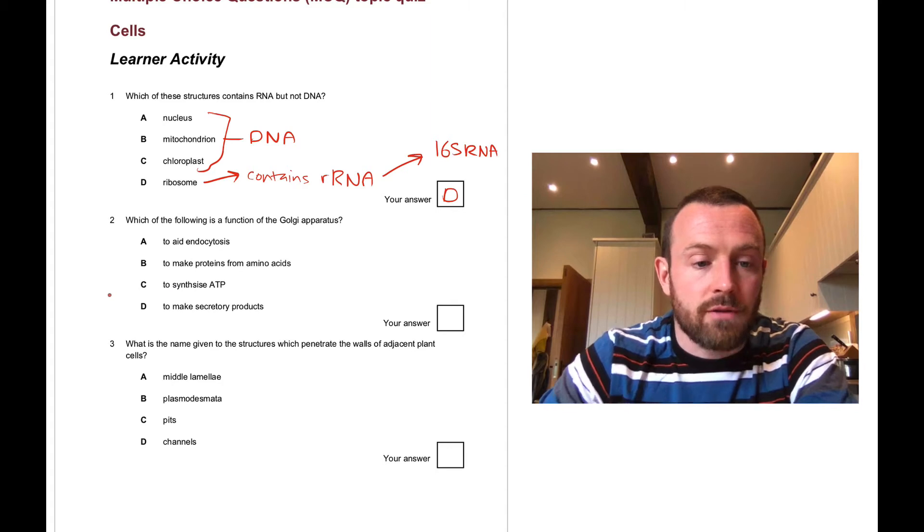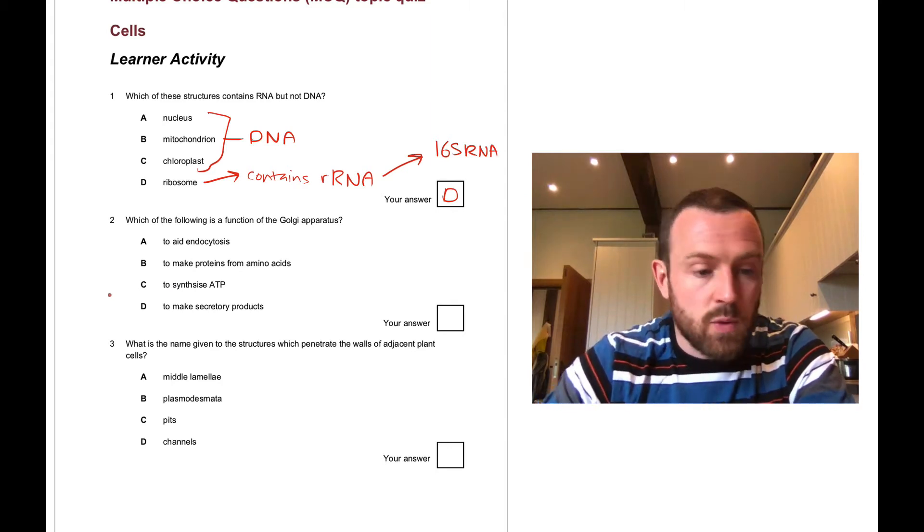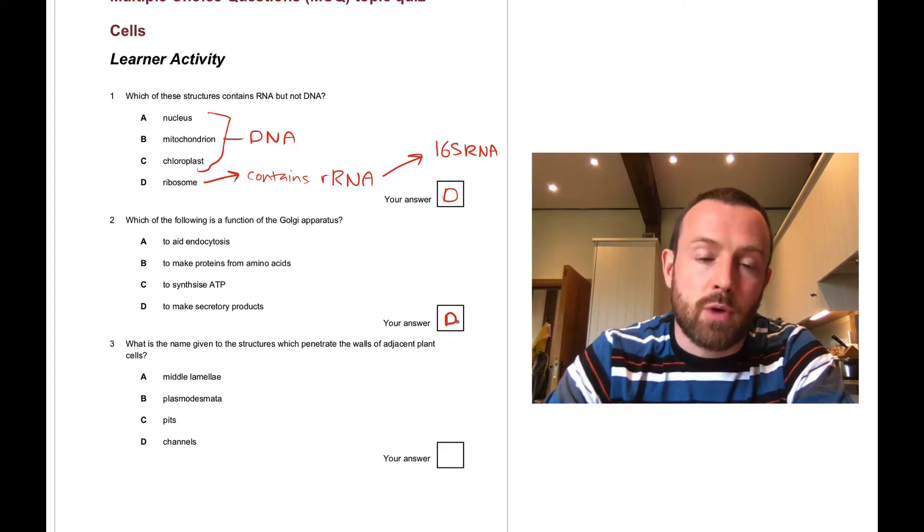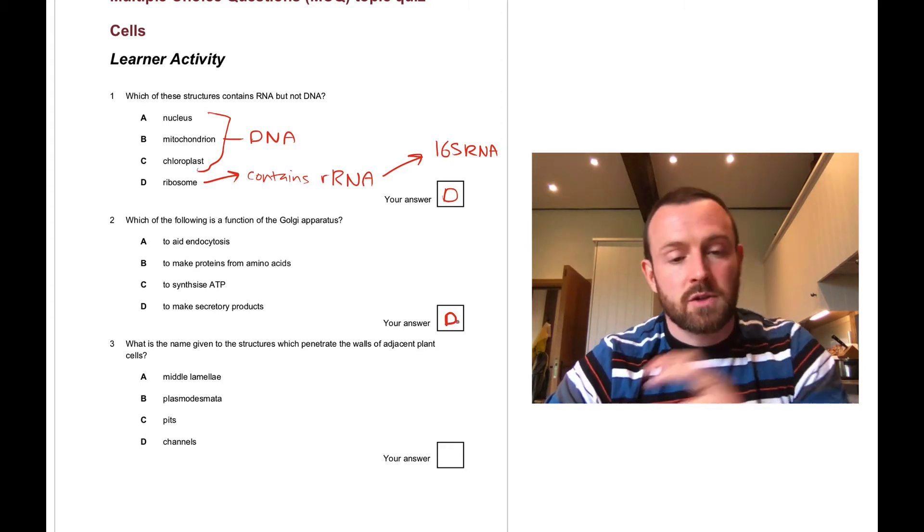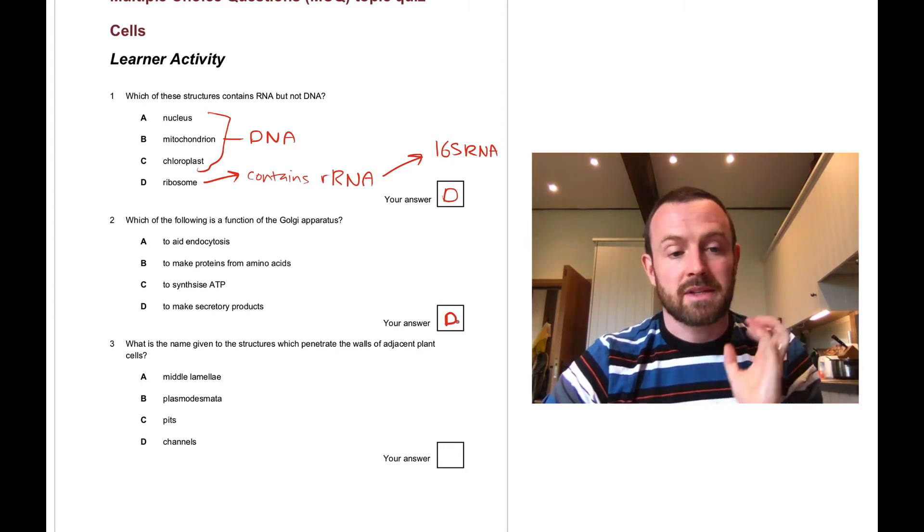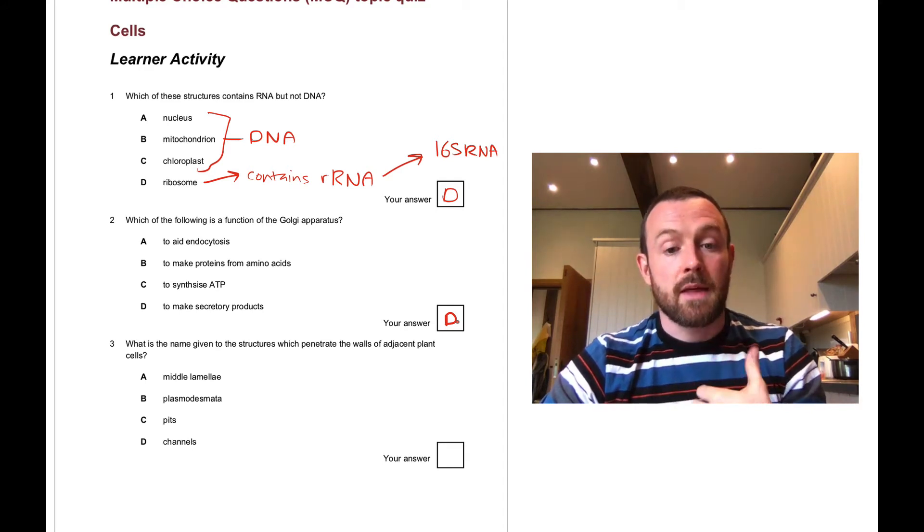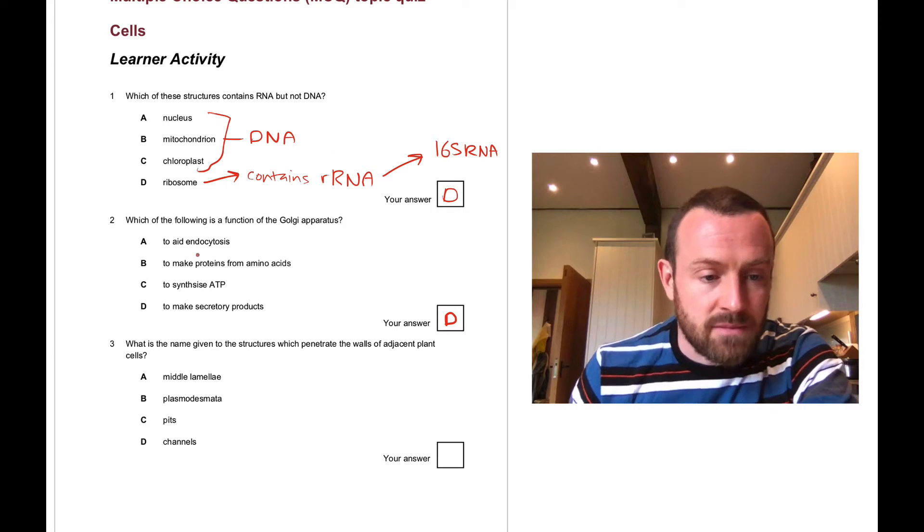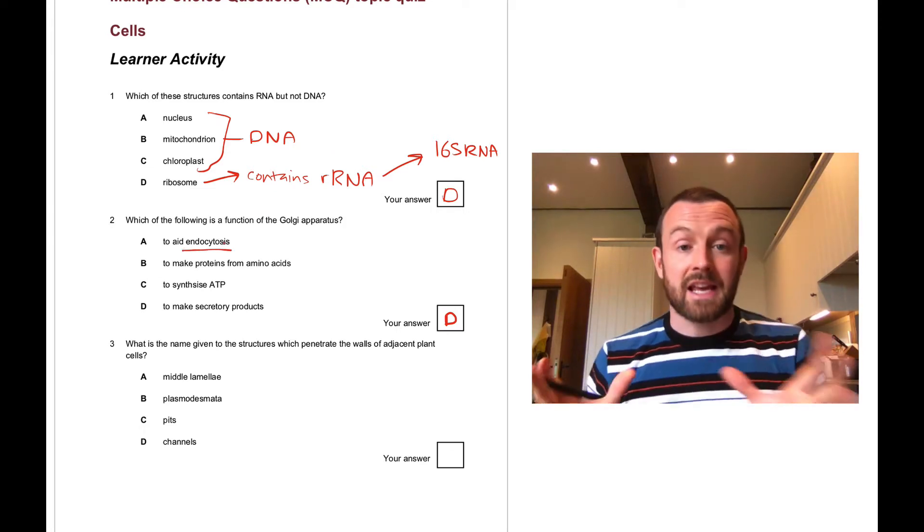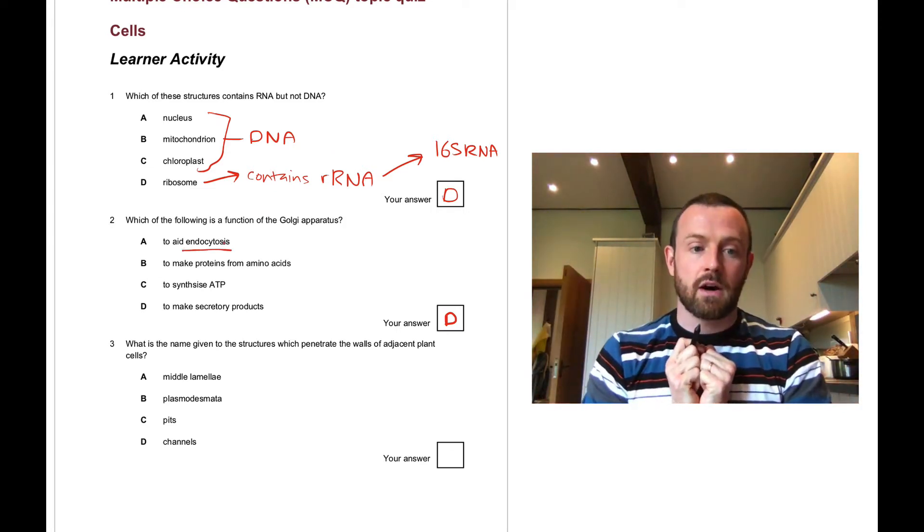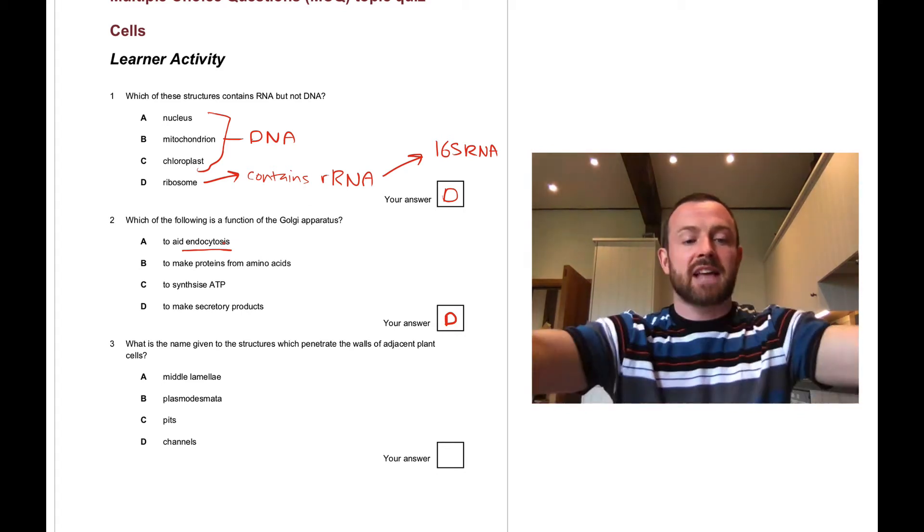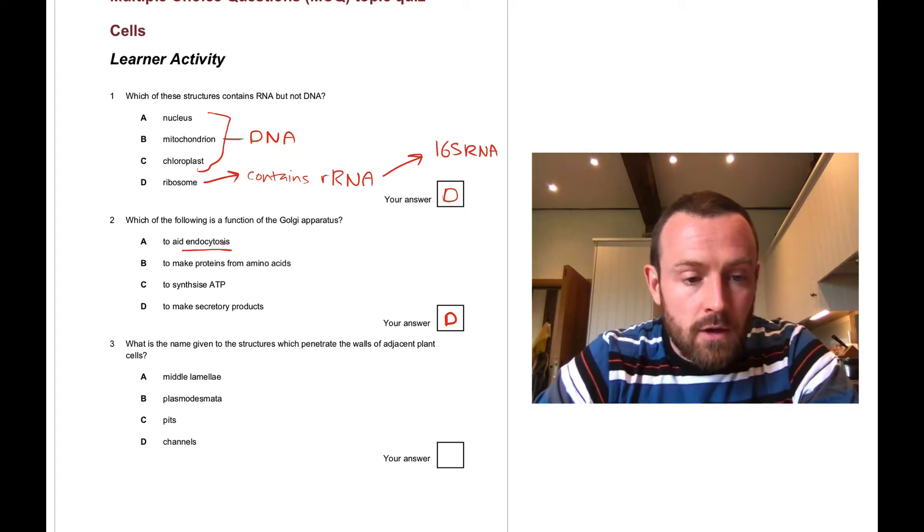Which of the following is the function of the Golgi apparatus? This one is to make secretory products. So that's when a protein is modified after it's been produced in the rough endoplasmic reticulum. It might be sent to the Golgi and modified and then secreted. Endocytosis—you might have been tempted by that one. That's sort of taking things in from outside the cell, and that's not really the Golgi's job. The Golgi's is sending things out.